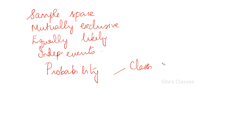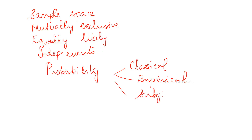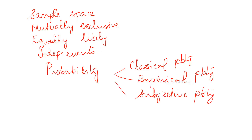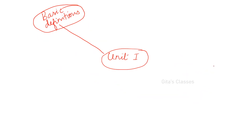We have also defined probability with three definitions: classical probability, empirical probability, and subjective probability. All these definitions are available. I'm not going to detail them because we have to do five units of revision, and in the mind map revision I have given all the definitions in detail. So please go through that.